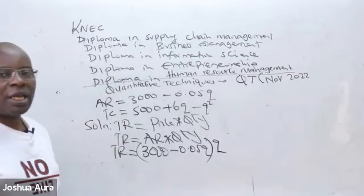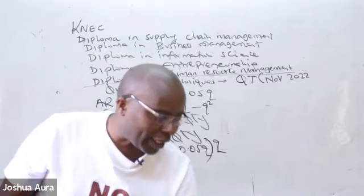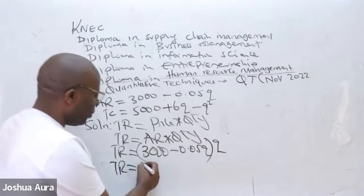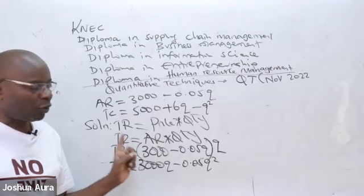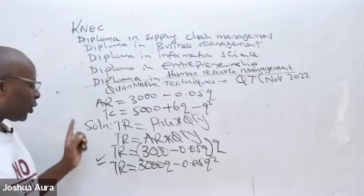So then go ahead and open brackets. So you open brackets, what do we have here as total revenue? So then these will be 3,000Q minus 0.05Q squared, because this Q will be spread to each of these terms. So then we have been able to do number one, where they wanted us to give them their total revenue.